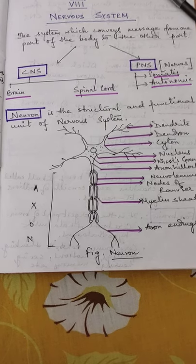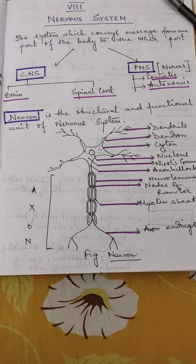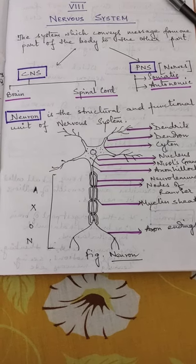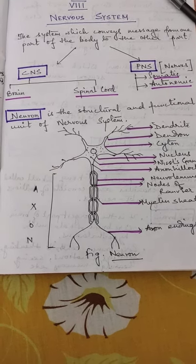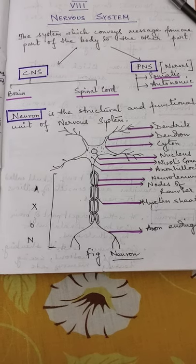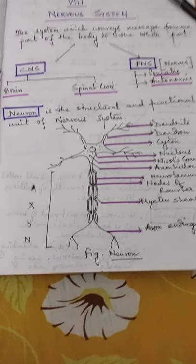As you all know, nervous systems are made up of nerves or neurons, the system which conveys messages from one part of the body to the other part.